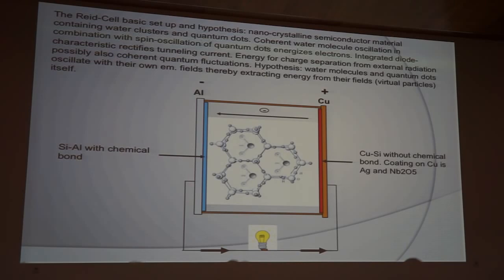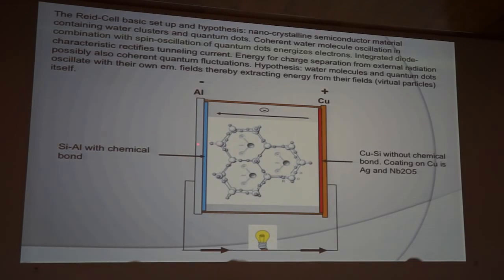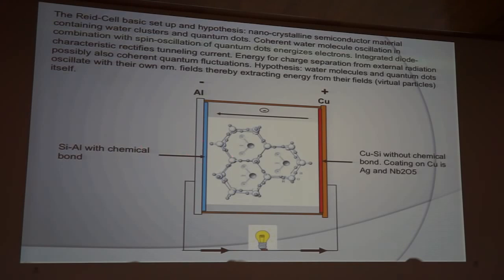Now, what we have here on the left side... the white field is a silicate material, the nanocrystalline semiconductor containing clusters and chains of water molecules, and they are attached to the aluminium, to the minus pole, chemically. So there's a chemical bond between the silicate and the aluminium. On the other side, we have copper, which is coated with silver and neop oxide. So the silicate has no chemical bond with the metal on that side.